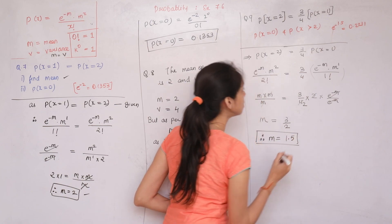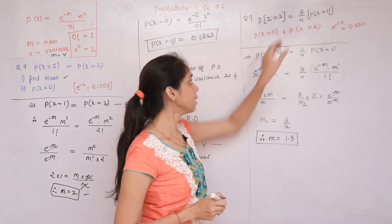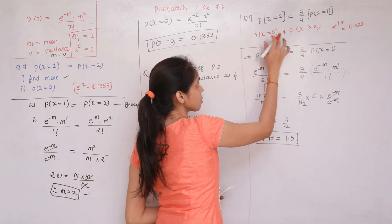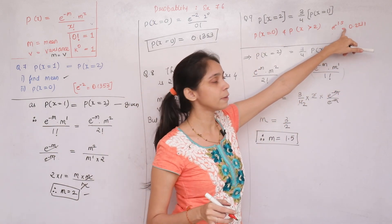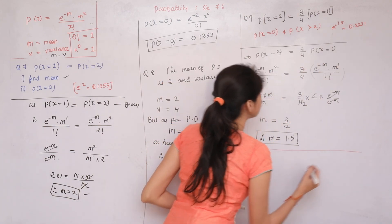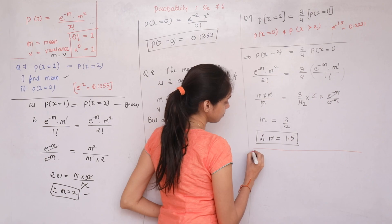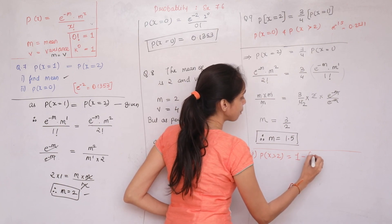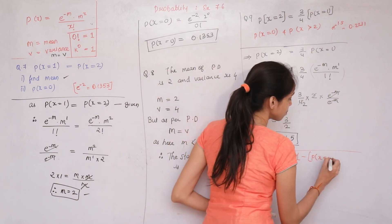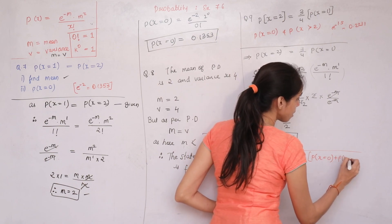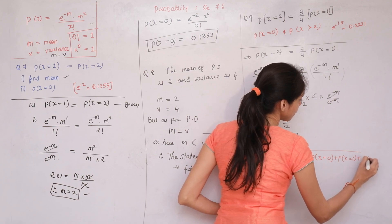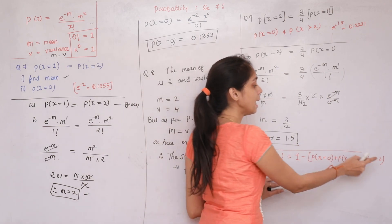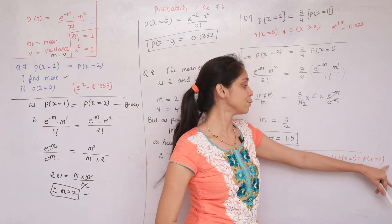Therefore m = 1.5, and e^(-1.5) = 0.2235 is given. Now, for the first condition, P(X=0) = e^(-1.5) × 1.5^0 / 0! = e^(-1.5) = 0.2235. For the second condition, P(X > 2) = 1 − [P(X=0) + P(X=1) + P(X=2)].